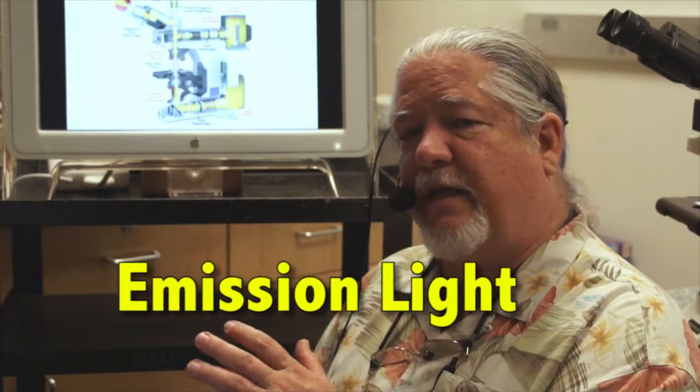Now a lot of specimens will auto fluoresce. You can excite them with a bright light, like 490 nanometers, and they will automatically give off light or emit light. That's called emission light. Usually the emission light is a longer wavelength than the excitation light, and we'll talk more about that later.